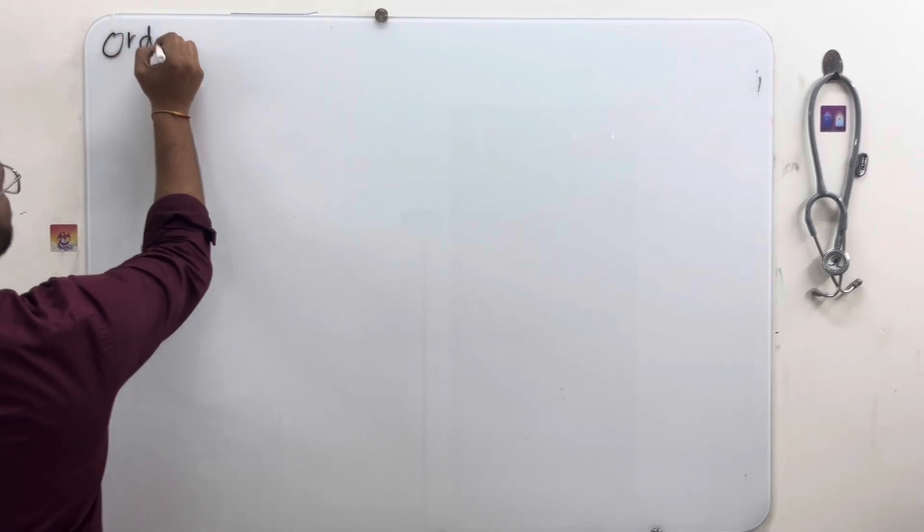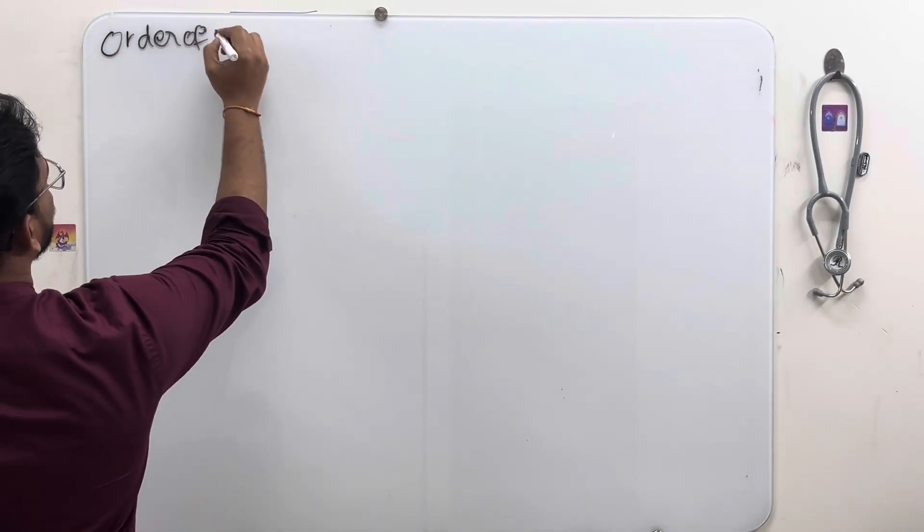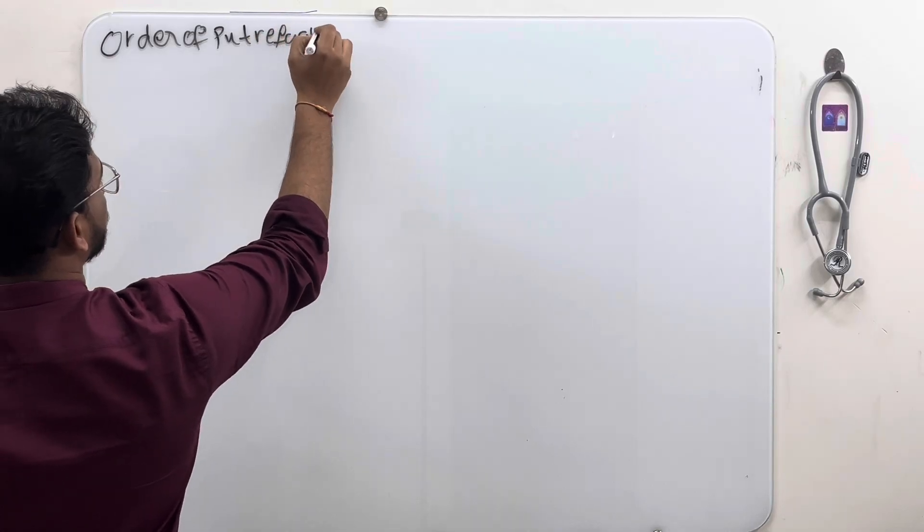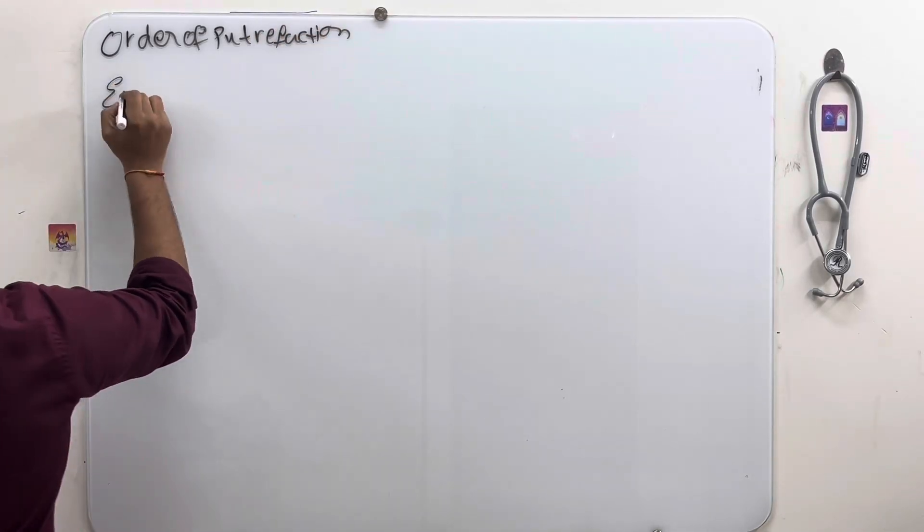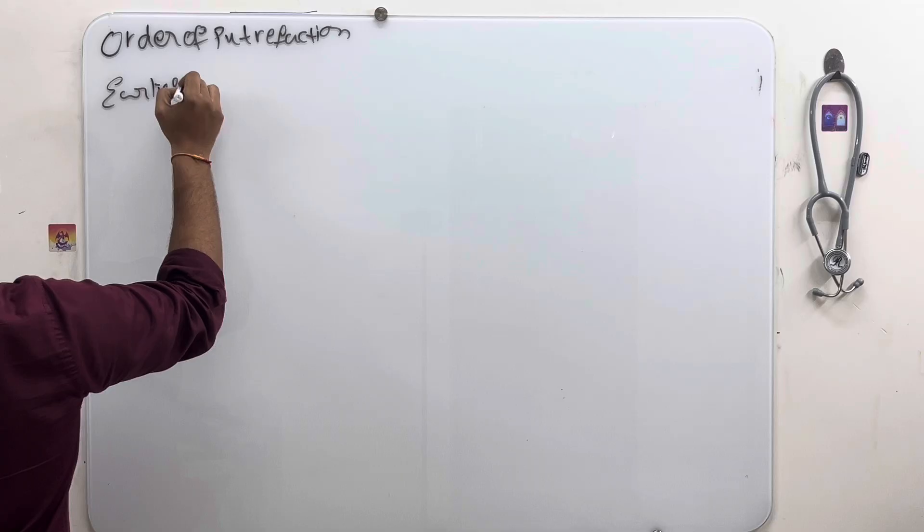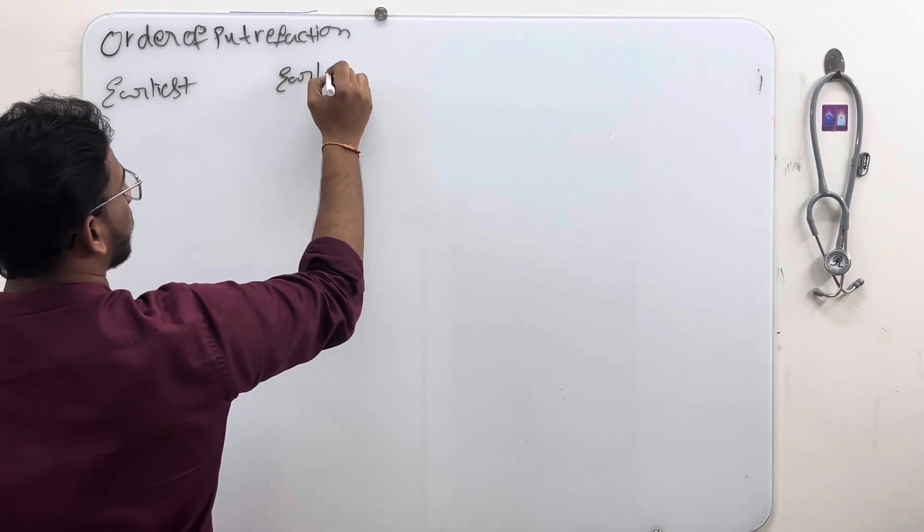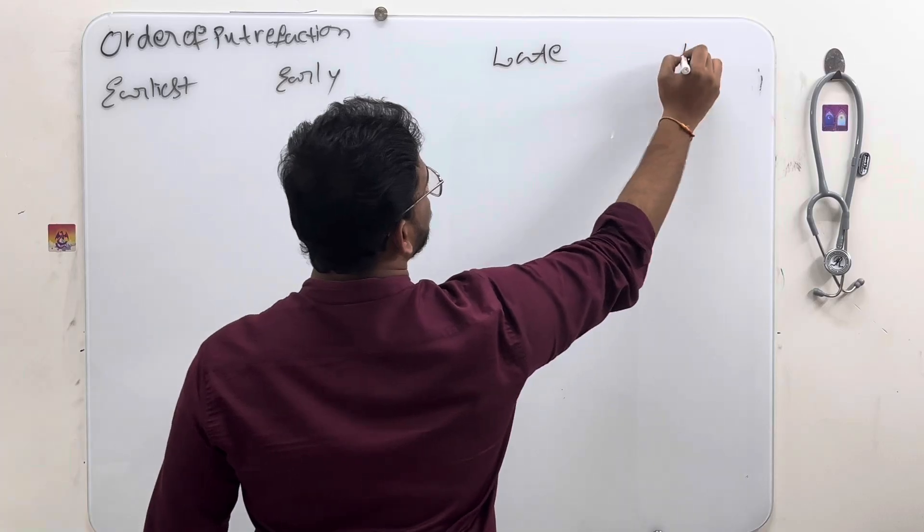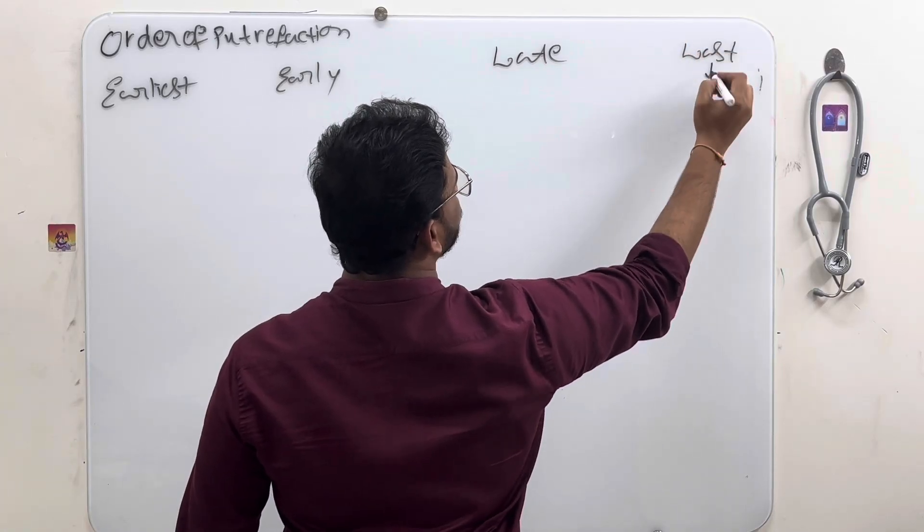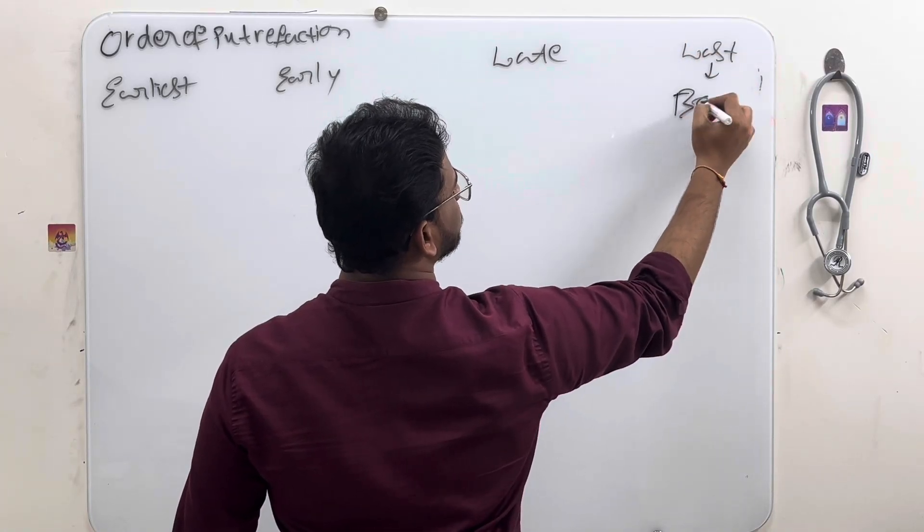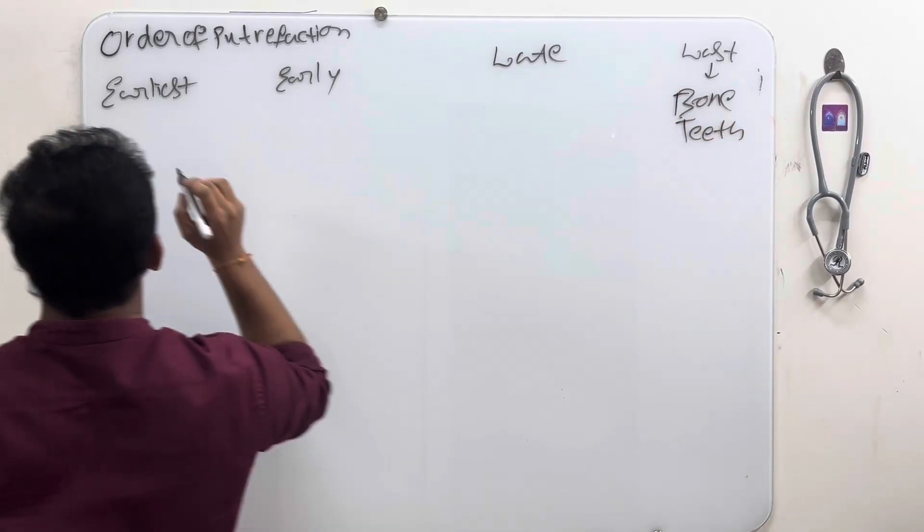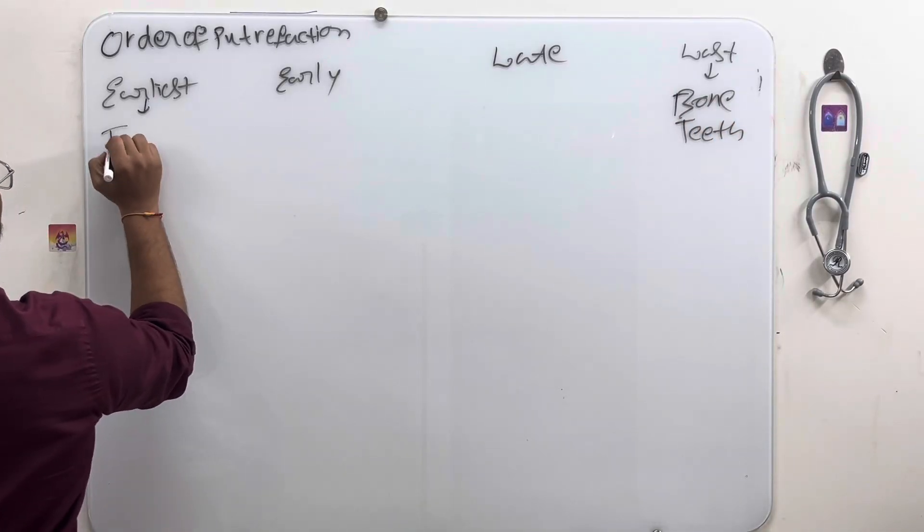Order of putrefaction. How the order goes. Earliest, early, late, lost. We can see in the lost putrefaction bone and teeth. We will see in the earliest trachea and larynx.